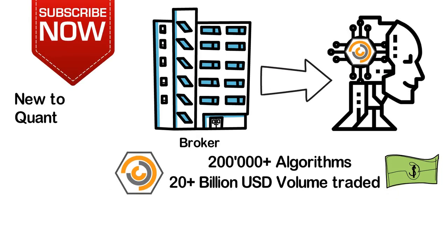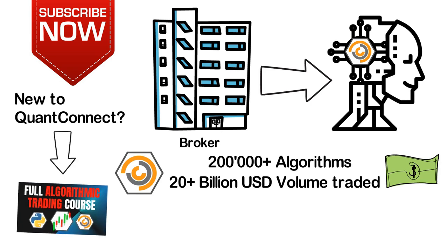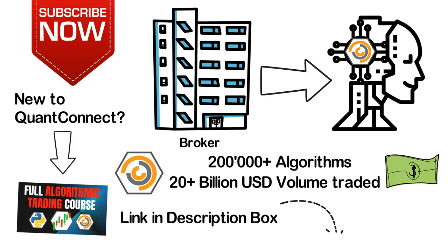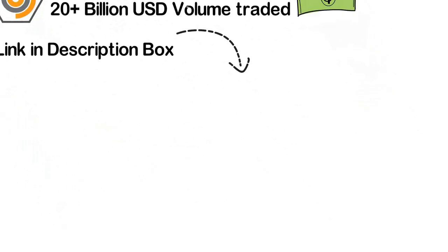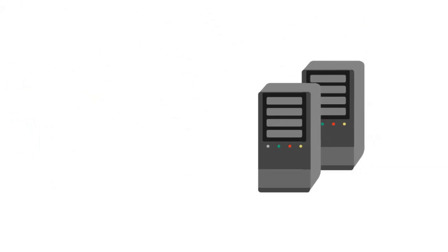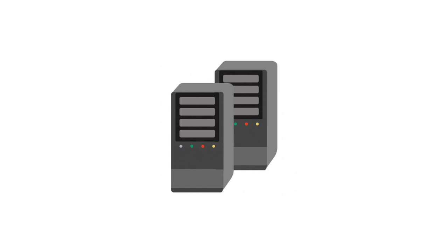If you are new to QuantConnect, I recommend first watching the first videos of my algorithmic trading course, in which you will learn everything you need to know to start developing your own trading algorithms. If you do not want to host your algorithms using QuantConnect, you can still use their open source Lean engine to develop and write your trading bots. However, then you would have to find your own hosting solutions. But in this video, we will focus on how to set up live trading using QuantConnect's hosting options, since that is definitely the easiest option.